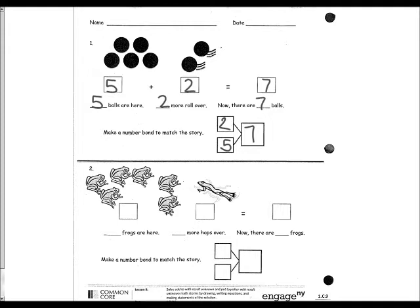At the bottom they do the same thing with frogs: six frogs are here, plus one more hops over — now there are seven frogs. Students make the number bond the same way, showing six and one make seven.